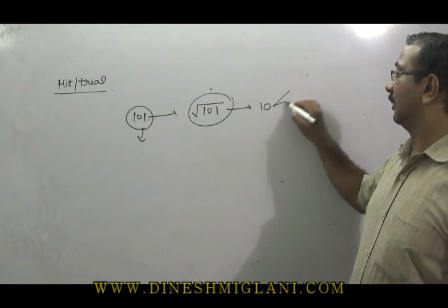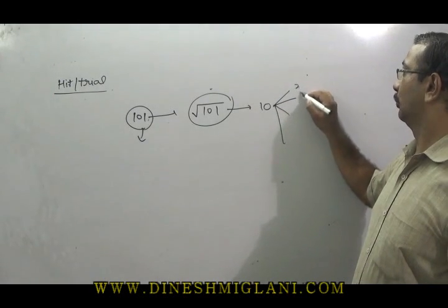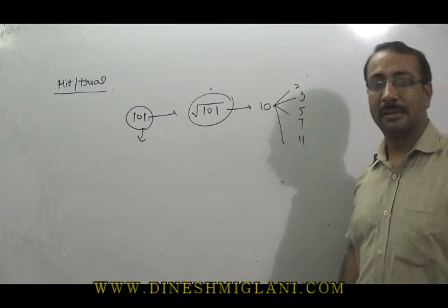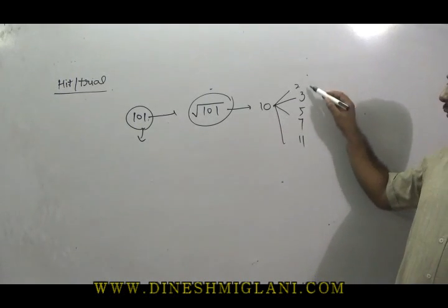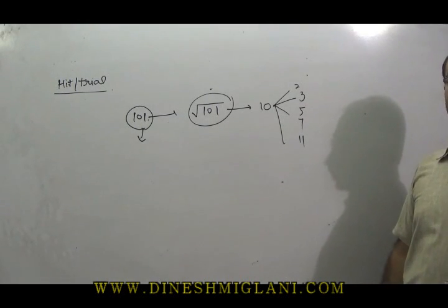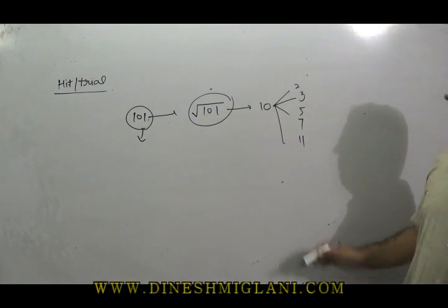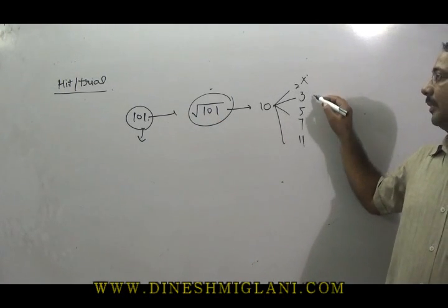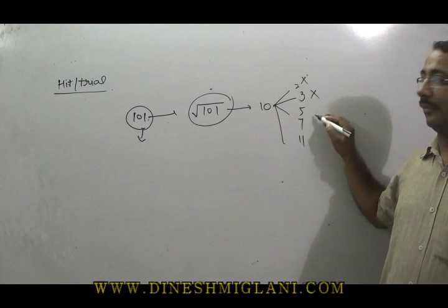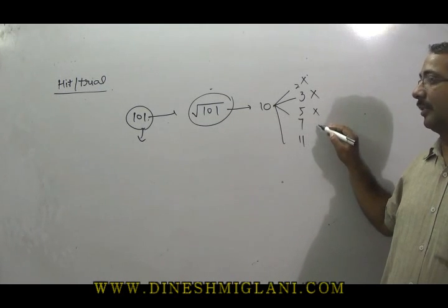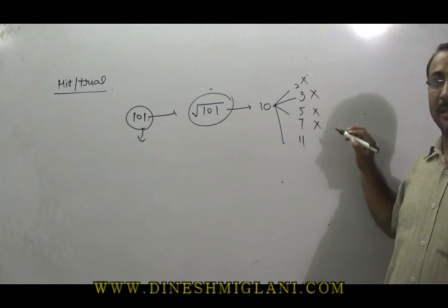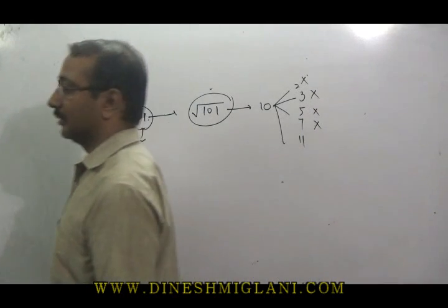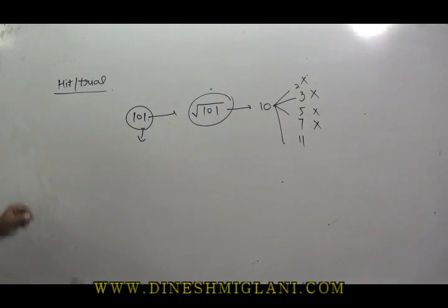Up to 10, write all the prime numbers: 2, 3, 5, 7. Check whether 101 is a multiple of 2 — no. Multiple of 3 — no. Multiple of 5 — no. Multiple of 7 — no. It means we can say that 101 is a prime number.